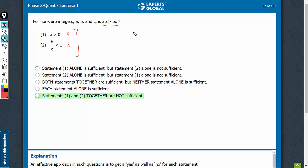On combining, imagine for a value such as a is equal to 10, b is equal to 1, and c is equal to 2. We will have ab as 10, bc as 2. So we will have yes as an answer, that yes, ab is greater than bc.